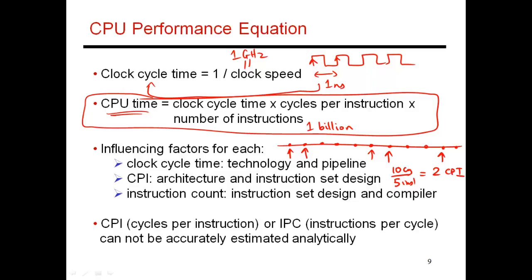So on average, every instruction takes about two cycles to finish. So if I have a billion instructions to finish, I should take about two billion cycles. That's the next factor in this equation. So I have a billion instructions. On average, each instruction takes about two cycles to finish. And then I have to also multiply it by the clock cycle time. So I have two billion cycles to finish. Each cycle is one nanosecond.